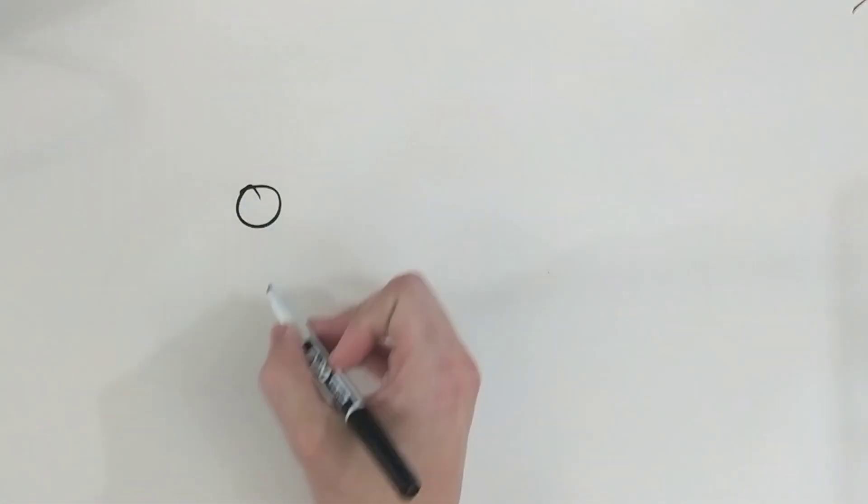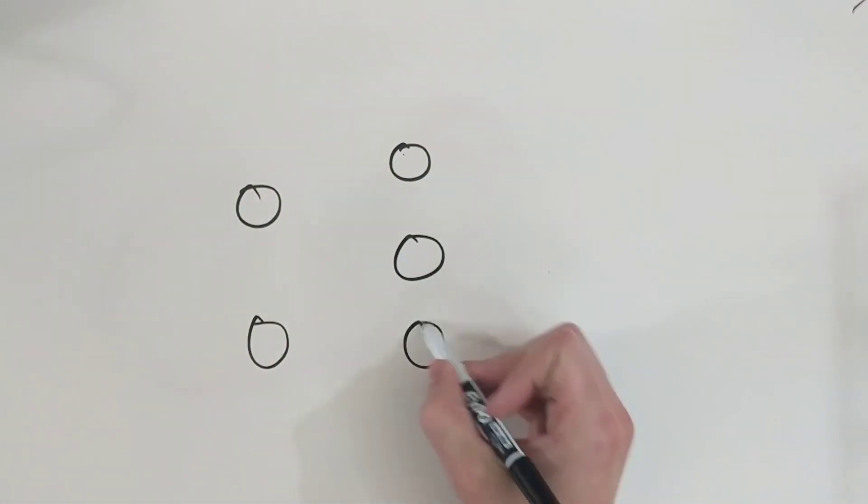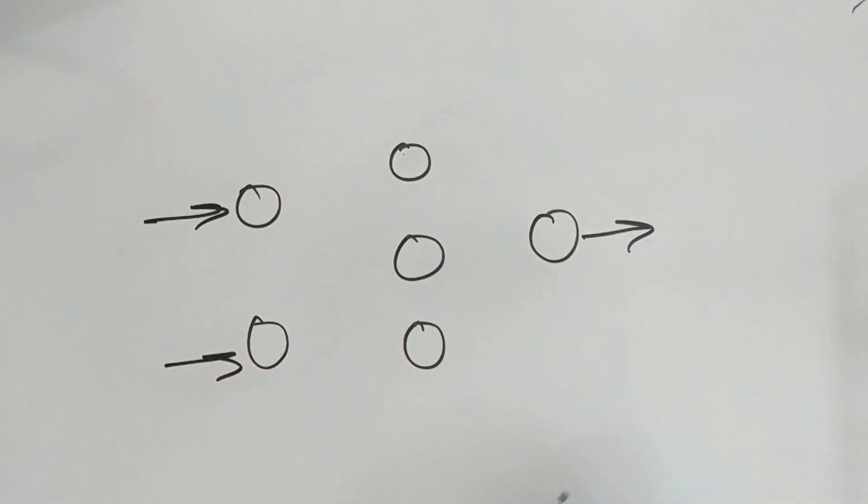We can expand upon the perceptron by adding additional layers to it. This is called a multi-layer perceptron, or an artificial neural network.